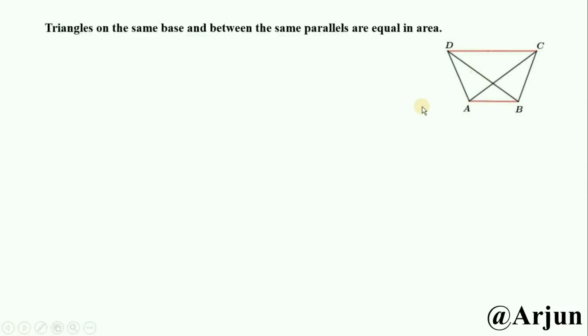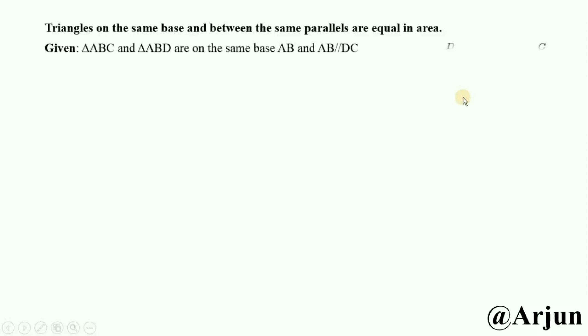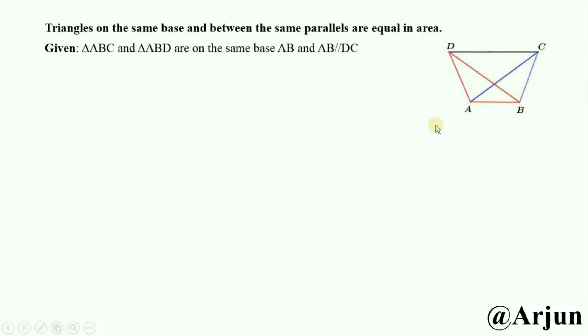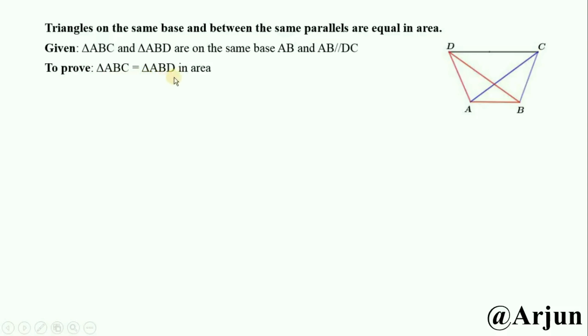AB and CD are parallel lines. On the same base AB, we have two triangles: triangle ABD and triangle ABC. Given: triangle ABC and triangle ABD are on the same base AB, and AB is parallel with DC. We need to prove that triangle ABC is equal to triangle ABD in area.